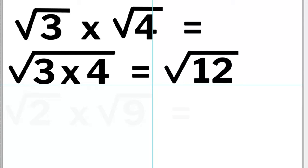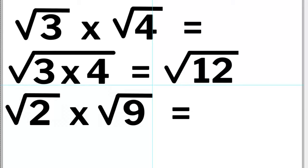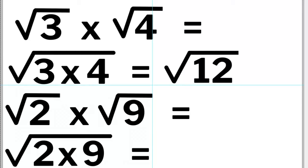Let's try another. The square root of 2 times the square root of 9. Make a new square root symbol and place 2 times 9 inside that new square root symbol. 2 times 9 equals 18. Thus, the answer is the square root of 18.